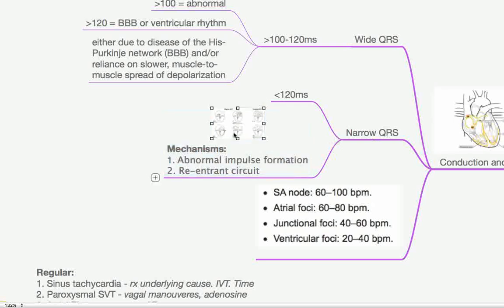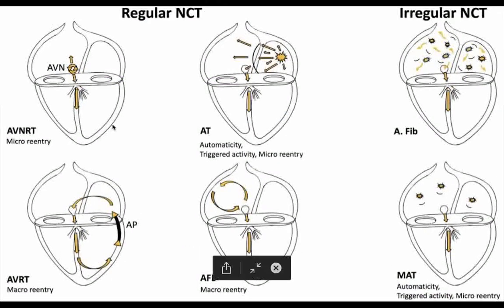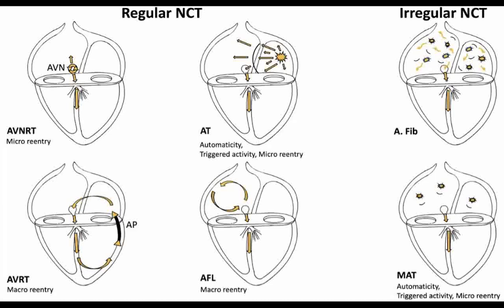So how do these narrow complex tachycardias come about? We've got two main mechanisms. The first is abnormal impulse formation. So just impulses being randomly or just formed in inappropriate places around the heart because anywhere in the heart can generate cardiac impulses, ectopic foci. The first one to look at atrial tachycardia. That is when there is a little focal point somewhere in the atrium, which is firing off impulses inappropriately and resulting in a tachycardia. Atrial fibrillation. It's when the entire atria are just fibrillating like crazy and it's firing off chaotic, irregular impulses down into the ventricles.